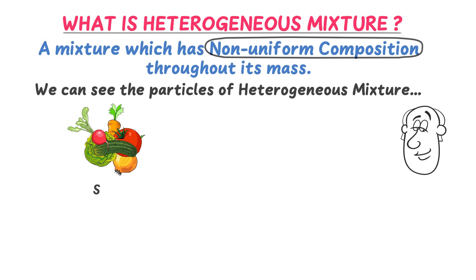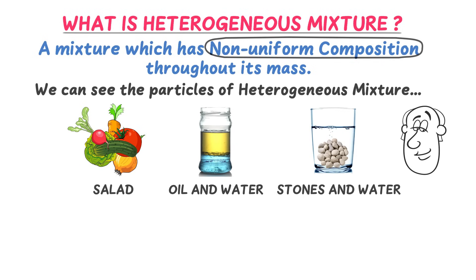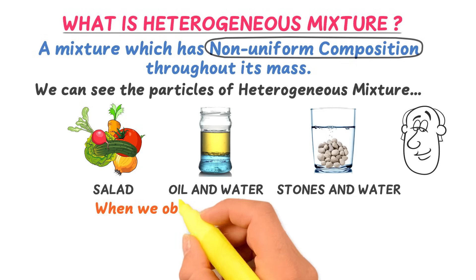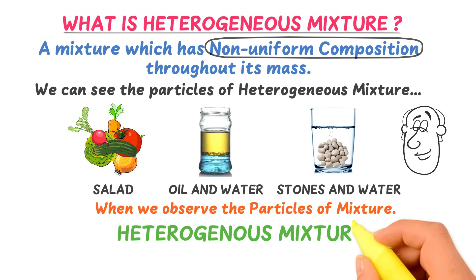The best example of heterogeneous mixture is salad. When you mix different vegetables physically, you get salad. You can easily recognize the ingredients of salad. The second example of heterogeneous mixture is oil plus water. When you put some oil into the water, it is known as a heterogeneous mixture. You can recognize the layer of oil above the water. The third example of heterogeneous mixture is when you put small pebbles or sand into the water — it is called a heterogeneous mixture. You can easily spot the sand and water.